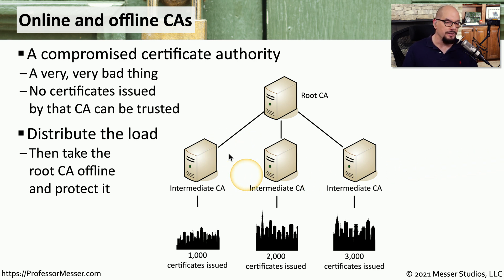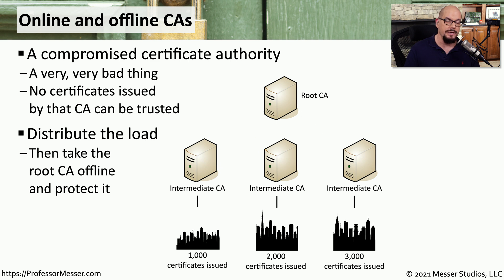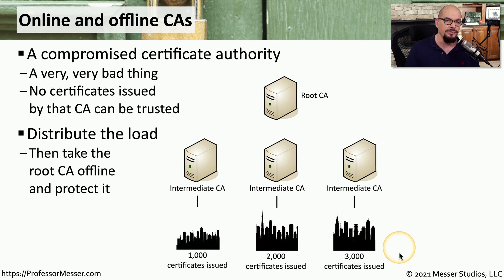We might, for example, want to build out some intermediate CAs, and those CAs are signing the certificates used throughout our organization. This means we can remove our root CA from the network and store it somewhere safely so that no one has access to the root CA certificates. This limits the scope of any compromise of a single intermediate CA, and we would only have to recreate a new CA and distribute a fraction of all the total certificates in our environment. The root CA remains protected, and if we need to create all new intermediate CAs, we have a protected CA that could not have been compromised.